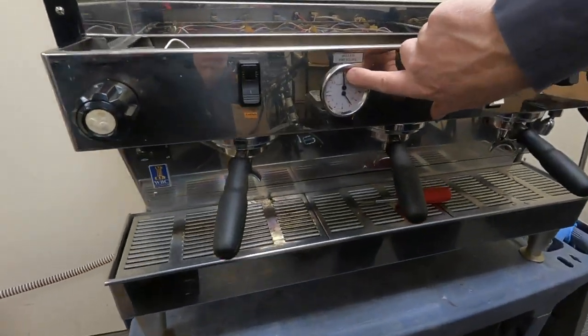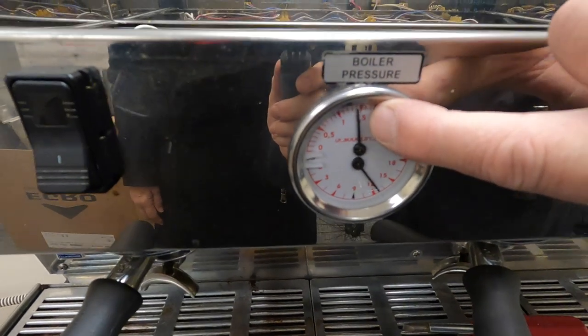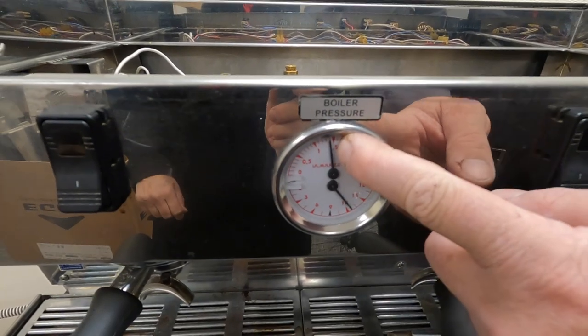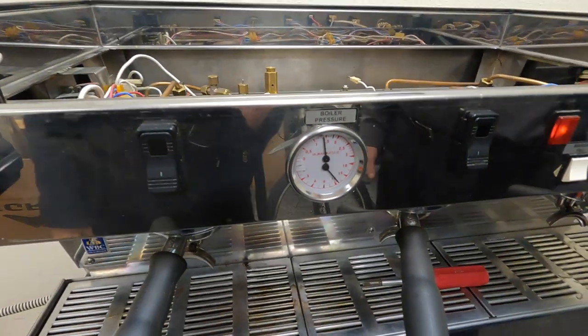I adjusted it up, so now it's at 1.4 bar. Keep in mind, you never want to go above 1.5 bar. Okay, so brew boiler.